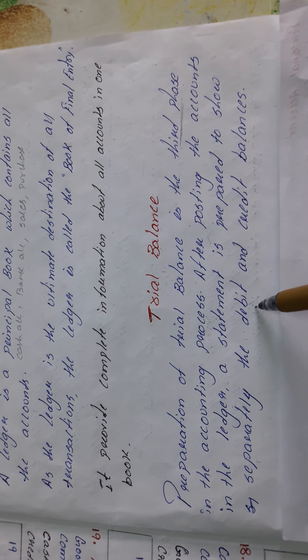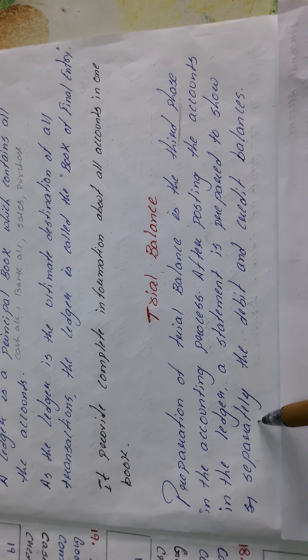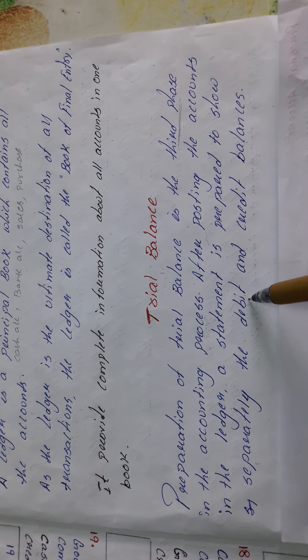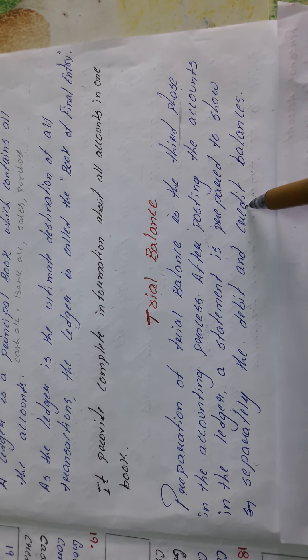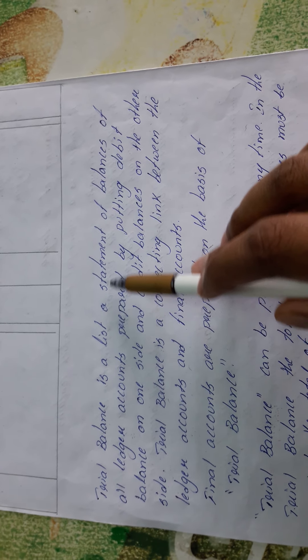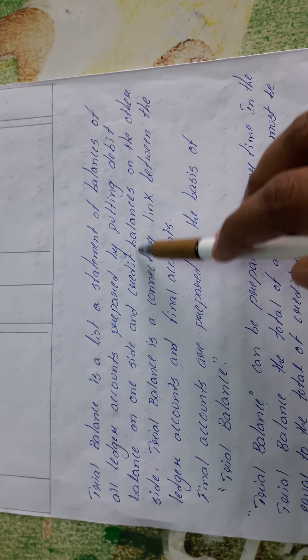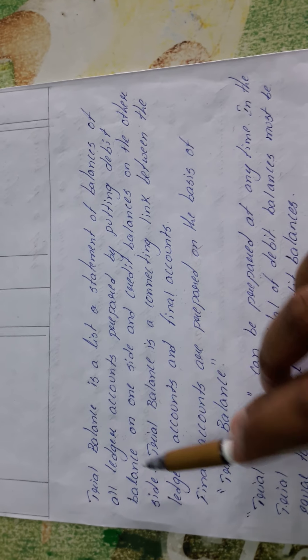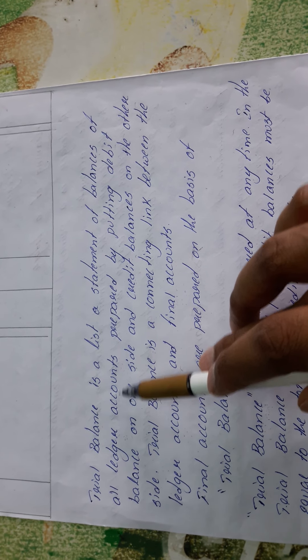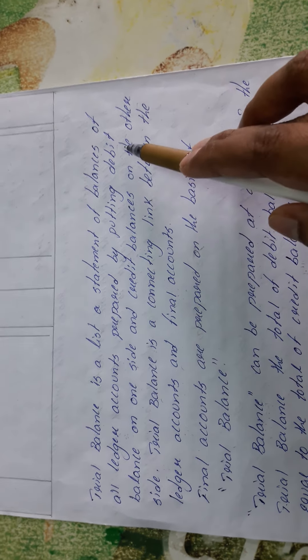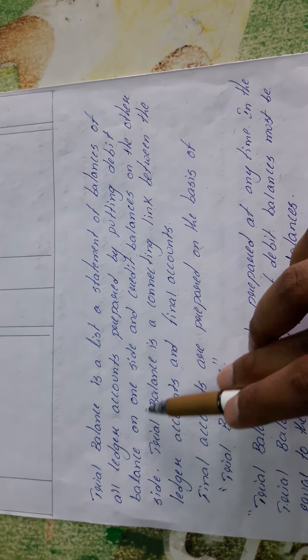In a trial balance, we separately have debit and credit balances. Trial balance is a list or statement of balances of all the ledger accounts, prepared by putting debit balances on one side and credit balances on the other side. Trial balance is a connecting link between the ledger accounts and final accounts.